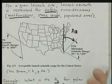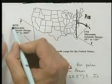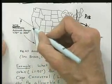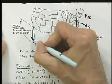Now if you want a highly inclined orbit then you go over to the western test range and launch in a southerly direction, which is allowed.